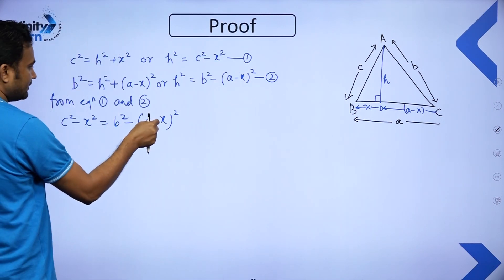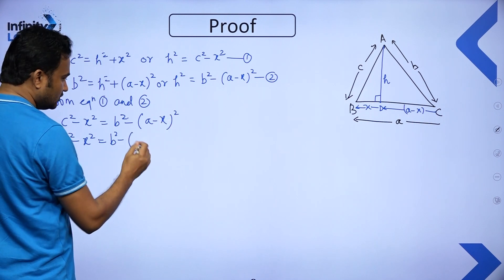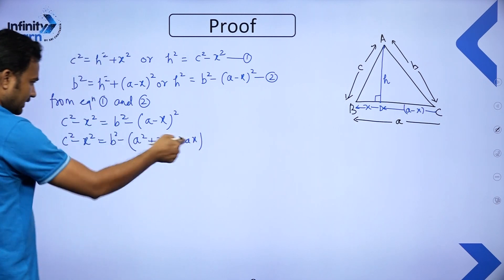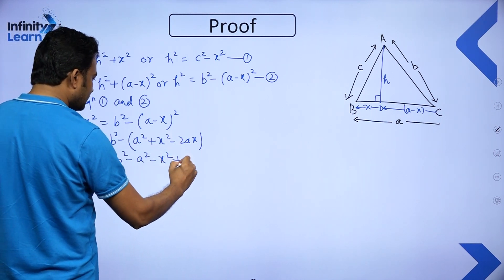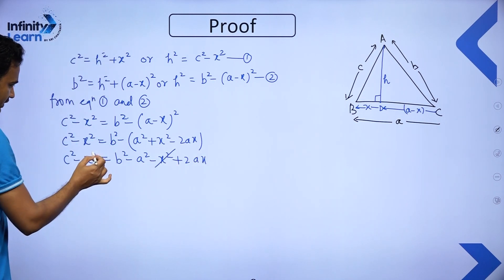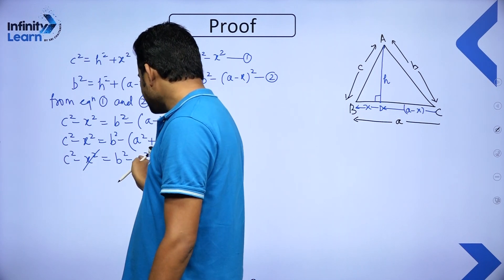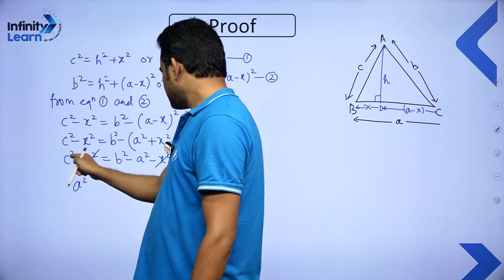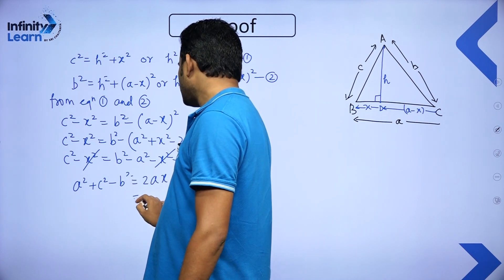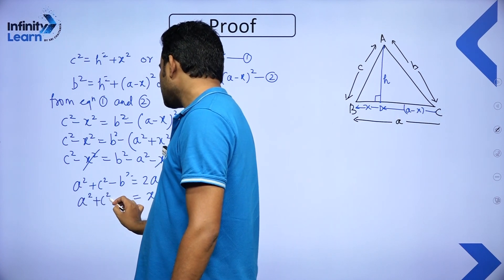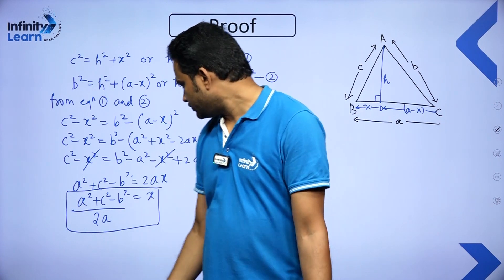Expanding (A − X)² using the identity gives A² + X² − 2AX. Opening the bracket: C² − X² = B² − A² − X² + 2AX. The X² terms cancel. Rearranging: C² − B² + A² = 2AX, so X = (A² + C² − B²) / 2A. This is the value of X expressed in terms of A, B, and C.